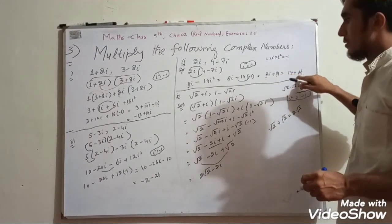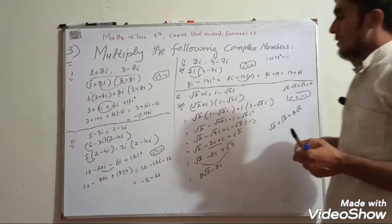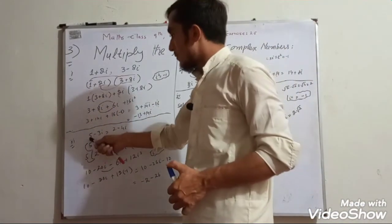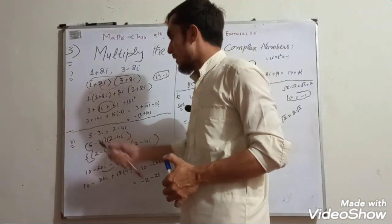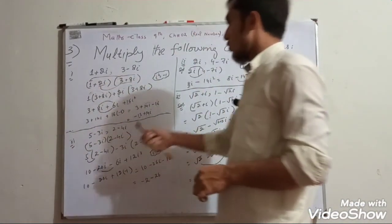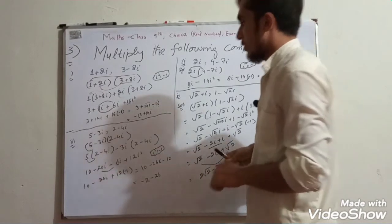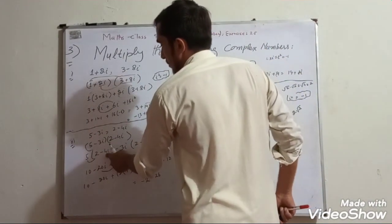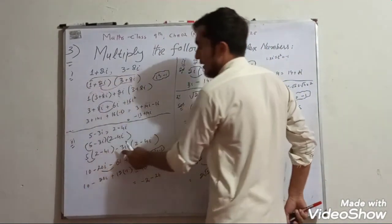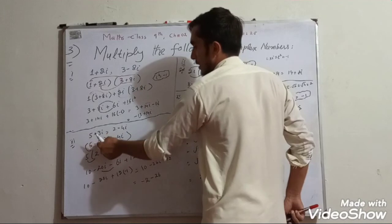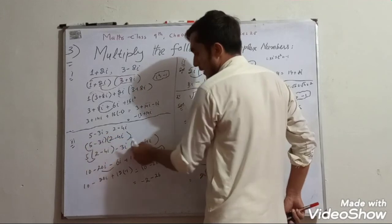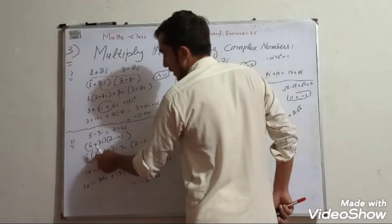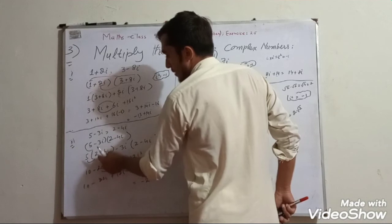Next: multiply 5 minus 3 iota by 2 minus 4 iota. 5 multiplied by 2 is 10, and minus 5 multiplied by 4 is minus 20. Then 3 iota multiplied by 2 is 6 iota.